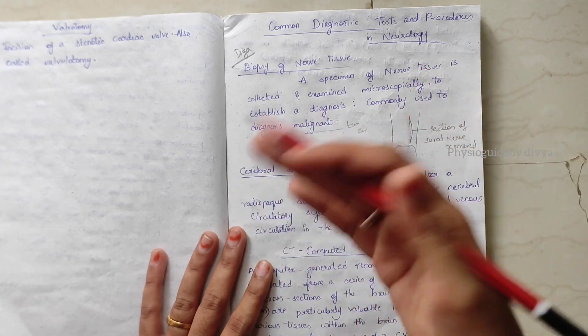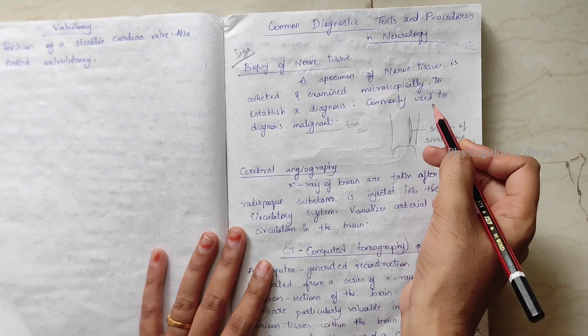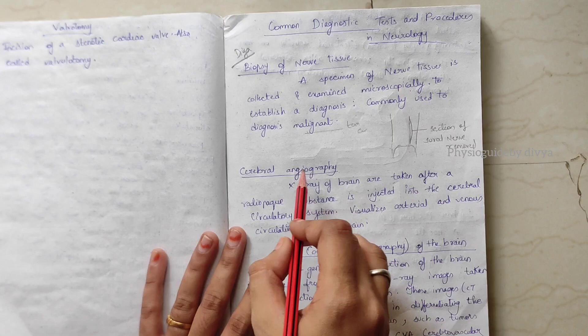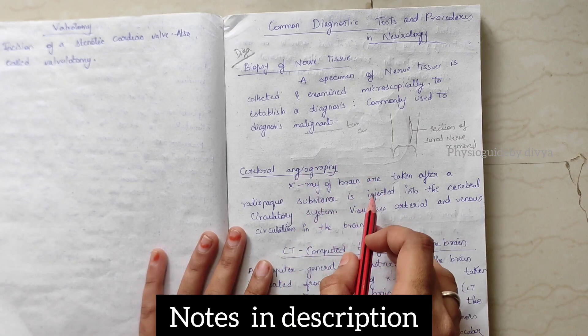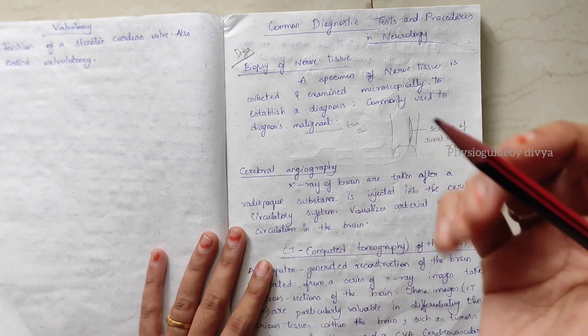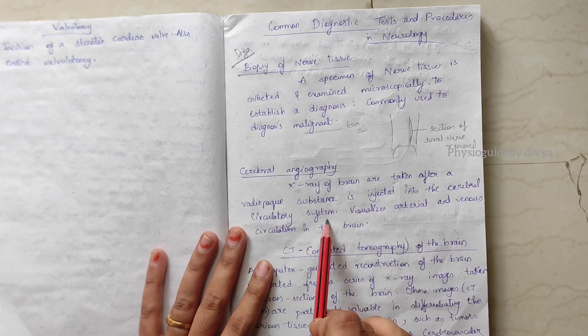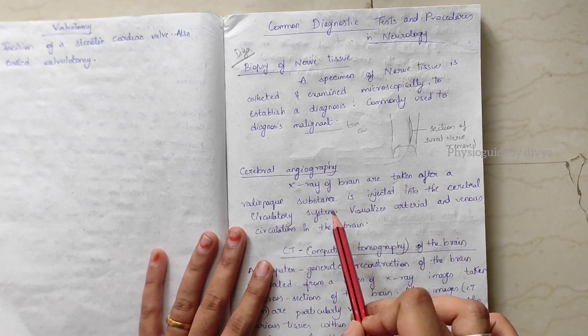This is commonly used to diagnose malignancy or tumors. Cerebral angiography is an x-ray of the brain taken after a radiopaque substance is injected into the circulatory system, the cerebral circulatory system.